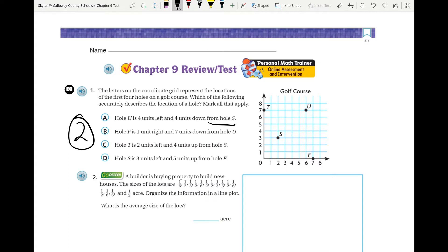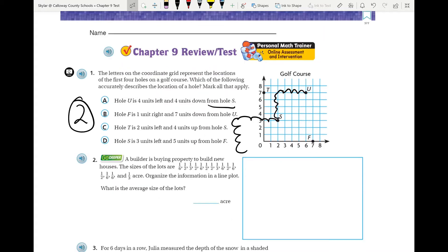It says hole U is four units left and four units down from hole S. So you would want to go to hole S and then see what happens if you go one, two, three, four, one, two, three, four. Well, you go off the grid. So hole U is not four units down and left from hole S. Some of you I'm afraid might have went one, two, three, four, one, two, three, four. Wait, that's true. But no, that would be hole S is four down and four left from U, not the other way around. Don't get it twisted.